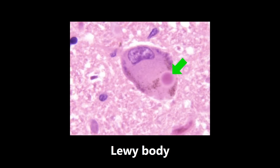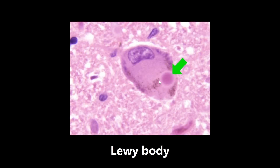This next image is an example of a Lewy body — very high yield. A Lewy body is an eosinophilic cytoplasmic inclusion. It's pink, seen in the cytoplasm of neurons, and is associated with two diseases: Parkinson's disease and Lewy body dementia. It's also very high yield to know what it's composed of — it's not enough to say just eosinophilic. It is composed of alpha-synuclein. So Lewy bodies are composed of alpha-synuclein, and if you see this kind of blurred-out area within a cell, think Lewy body.